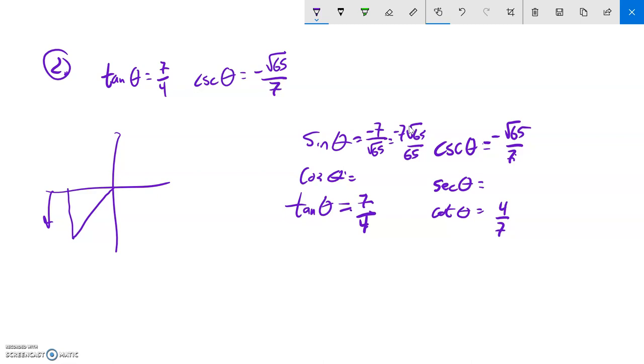Tangent 7 fourths, rise over run. So that's 7 and that's 4. But notice they're both going back. So those are both negative. And that root 65 must be my r. And I could get that with Pythagorean theorem too.